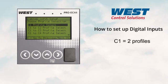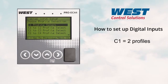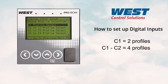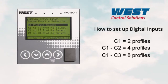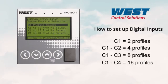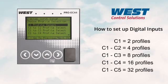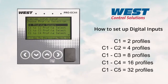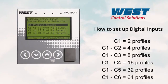C1 equals two profiles. C1 to C2 equals four profiles. C1 to C3 equals eight profiles. C1 to C4 equals 16 profiles. C1 to C5 equals 32 profiles. And C1 to C6 equals 64 profiles.